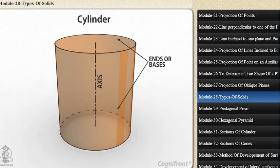It has two equal circular bases. The line joining the centers of the bases is the axis. It is perpendicular to the bases.